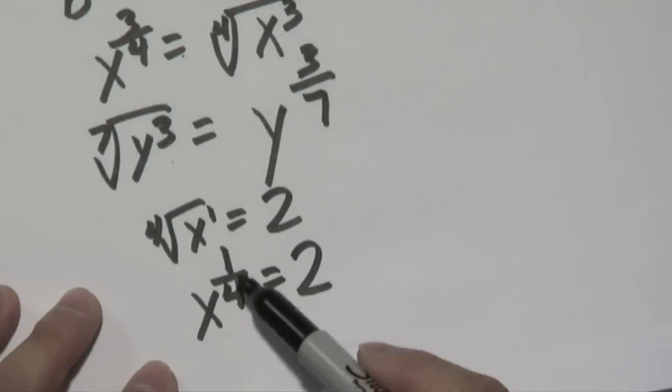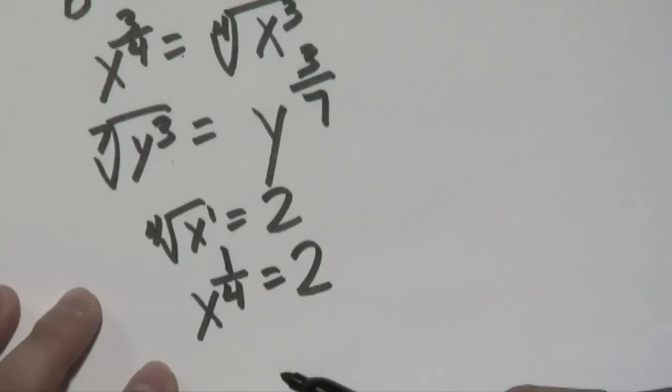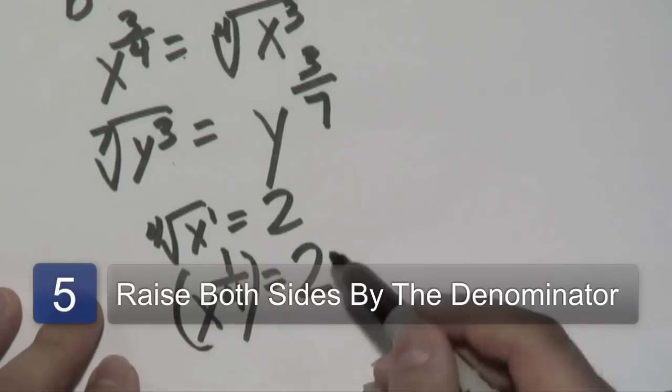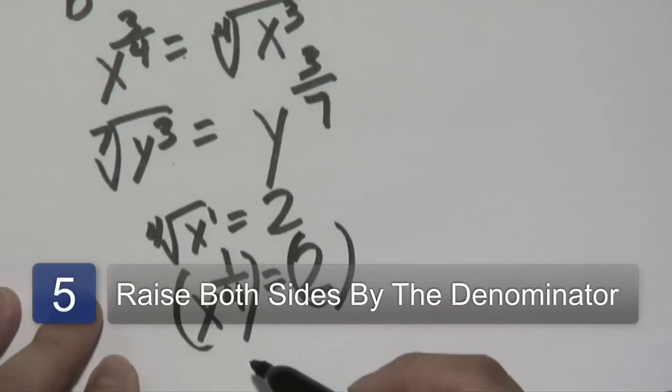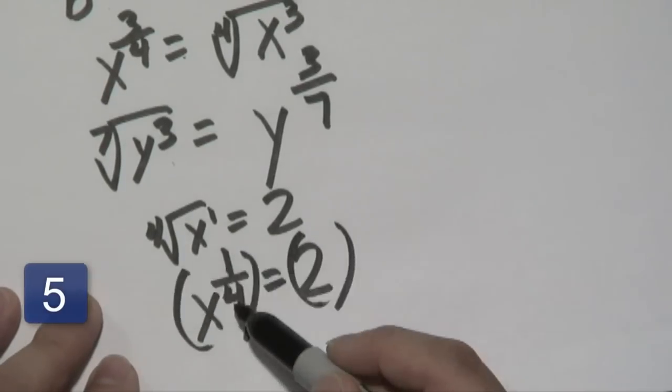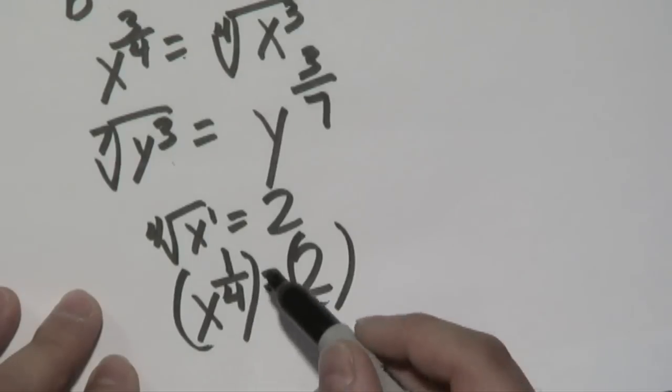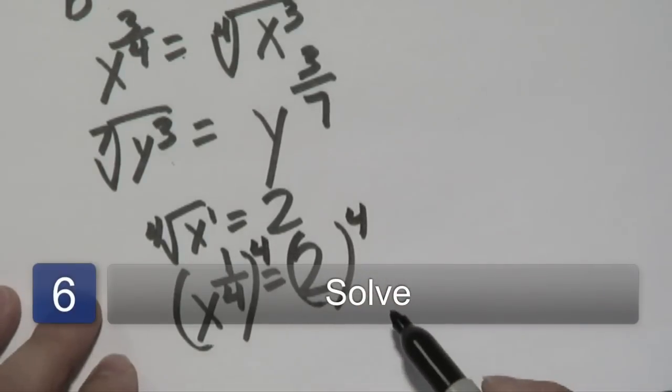Now, to get rid of any radicals which become an exponent, you will raise both sides by the denominator of the exponent. So in this case, this being 4, you raise both sides to the fourth power.